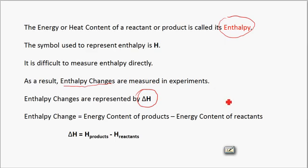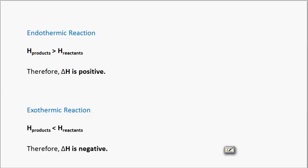The enthalpy change is equal to the energy content of the products minus the energy content of the reactants. Mathematically, delta H equals the energy content of the products minus the energy content of the reactants. For an endothermic reaction, the energy content of the products is greater than the energy content of the reactants, so delta H is positive for an endothermic reaction.